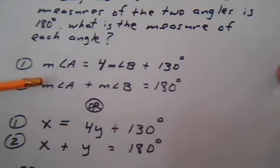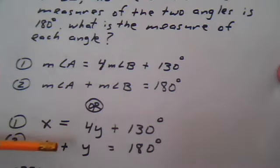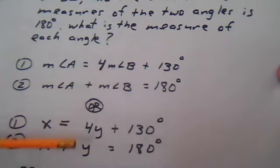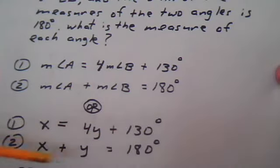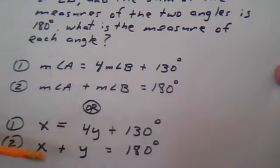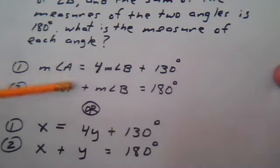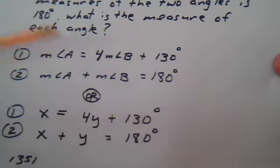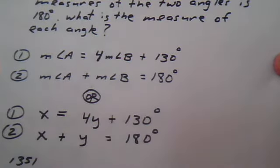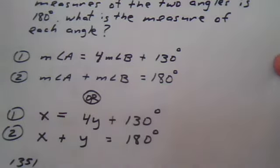Number two, the measure of angle A, which we're calling X, plus the measure of angle B, which we're calling Y, equals 180. So this looks simpler. It's easier to look at this than this. And they mean the same thing. So we're going to work with the X's and Y's where X is the measurement of angle A and Y is the measurement of angle B. So these two equations come from reading this paragraph.